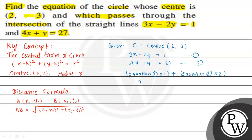To find the intersection point, we multiply equation 1 — that is, 3x minus 2y equals 1 — and for equation 2, multiplying 4x plus y equals 27 by 2 gives 8x plus 2y equals 54. Adding the two equations, the 2y terms cancel, giving us 11x equals 55. So x equals 5.